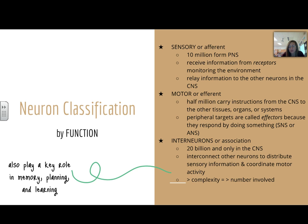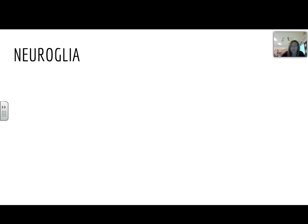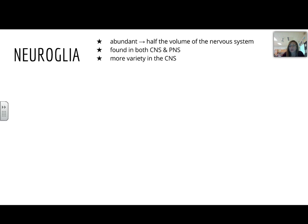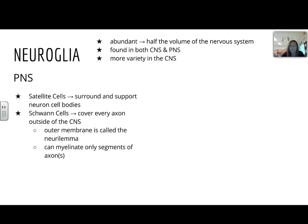Interneurons also play a key role in memory, planning, and learning. Your neuroglia, your support cells for the neurons, are very abundant — they're half the volume of the nervous system, found in both the CNS and the PNS, though there's more variety in the central nervous system. There are two types in the peripheral: satellite cells surround and support neuron cell bodies, and Schwann cells cover every axon outside of the CNS. That outer membrane is called the neurolemma, and Schwann cells can only myelinate segments of one axon or multiple axons.